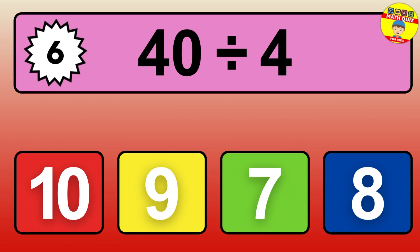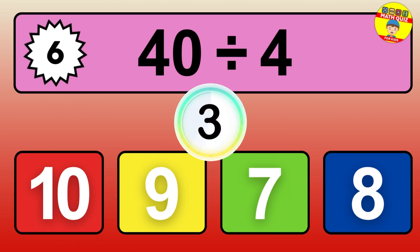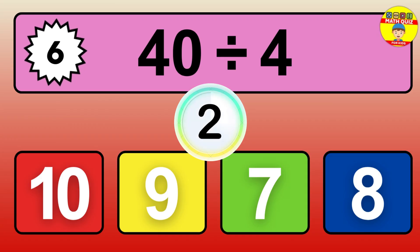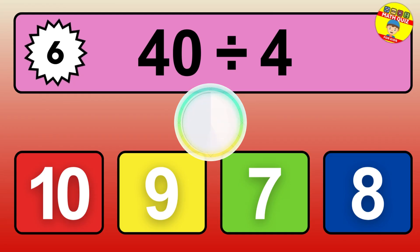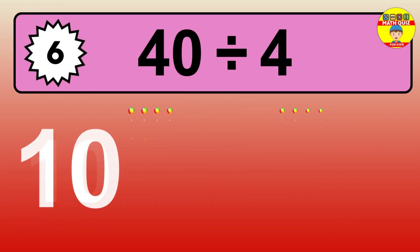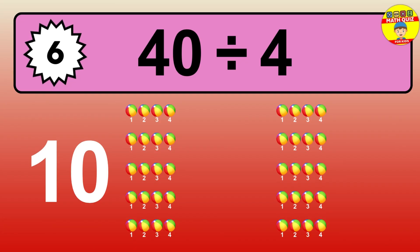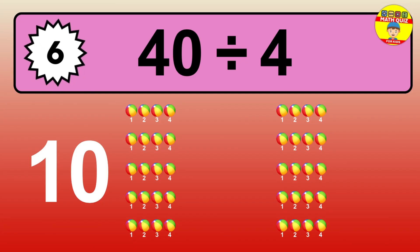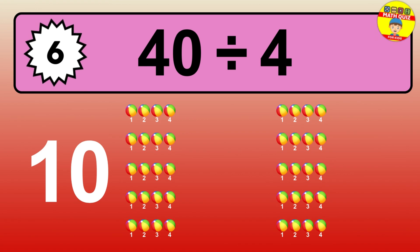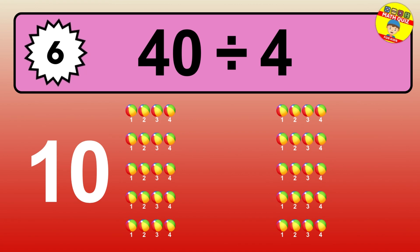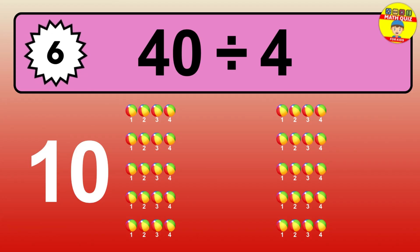48 divided by 8 — time to think. Let's go to the solution. Divide the number 48 by 8. Each group contains 8 units, so dividing 48 by 8 results in 6 equal groups. Thus, the result is 48 divided by 8 equals 6.